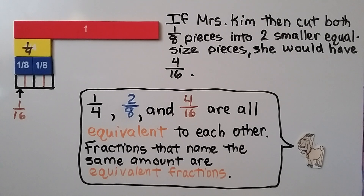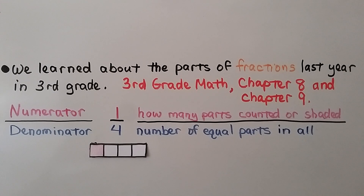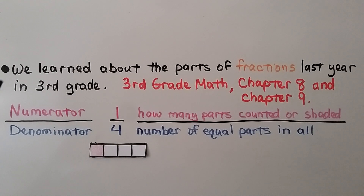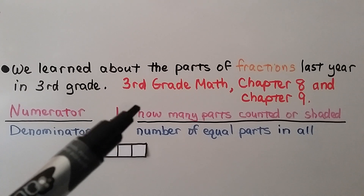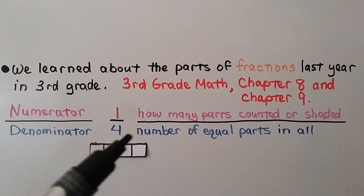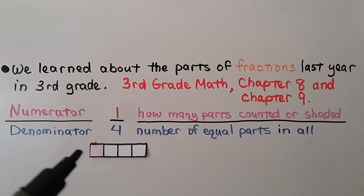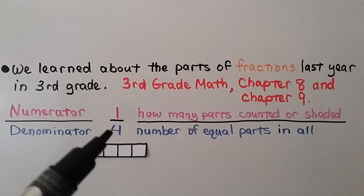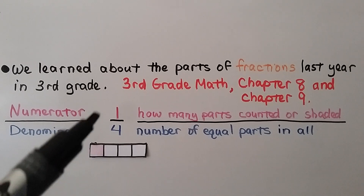Fractions that name the same amount are equivalent fractions. We learned about the parts of fractions in third grade — chapters eight and nine will be linked in the description if you've forgotten. The numerator is on the top and the denominator is on the bottom. The numerator tells us how many parts are counted or shaded, and the denominator tells us the number of equal parts in all. For one-fourth, it's split into four equal parts (the denominator) and one part is shaded (the numerator).